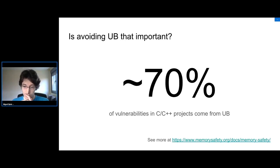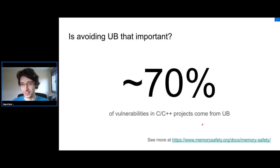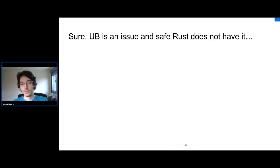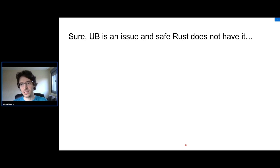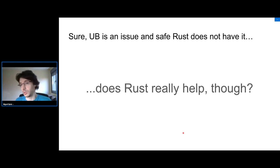There are some slides and data on this — you can read the linked reference or see the other talk recordings. Someone might say: okay, undefined behavior causes 70% of vulnerabilities, but does using Rust actually help? There are questions to ask — for example, if you have to use a lot of unsafe Rust, perhaps it doesn't really matter.